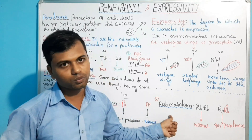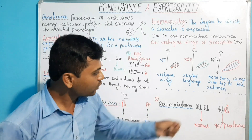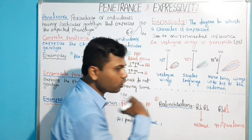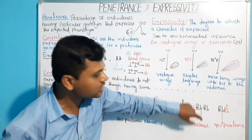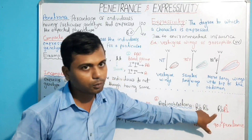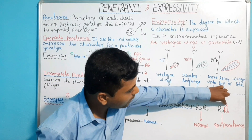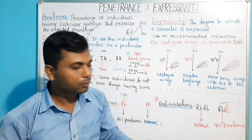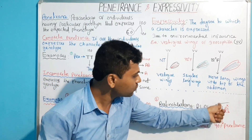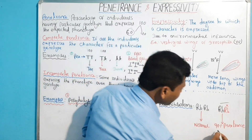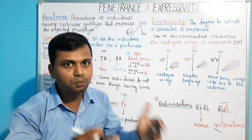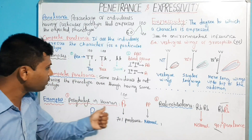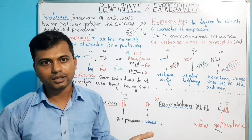Another example is retinoblastoma, which is known as eye cancer. Retinoblastoma is controlled by the gene RB. A person having two wild-type copies of the RB gene (RB-RB) is normal. But in a heterozygous condition, one normal copy and one defective copy of RB gene are present. In such heterozygous individuals, throughout their lifetime there is a 90% chance that the normal gene becomes affected, leading to a 90% chance of developing retinoblastoma or eye cancer. So, polydactyly and retinoblastoma are examples of incomplete penetrance.